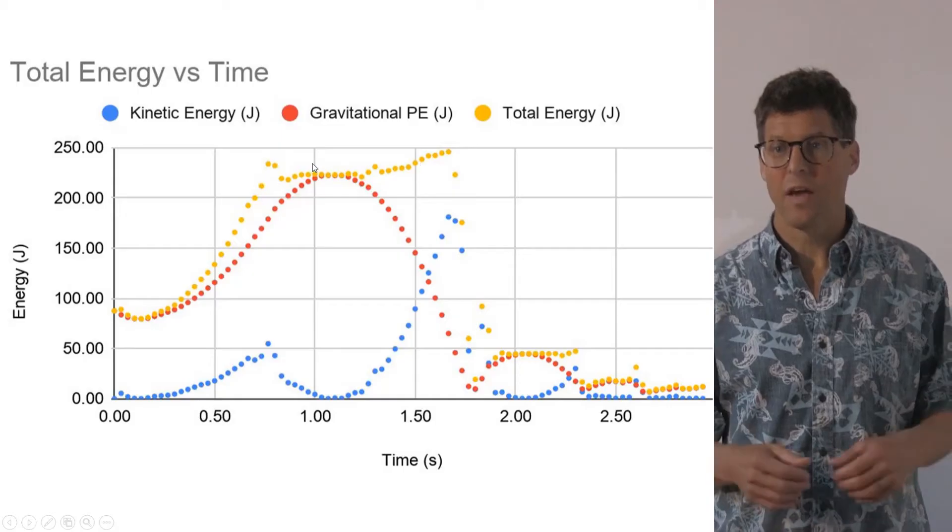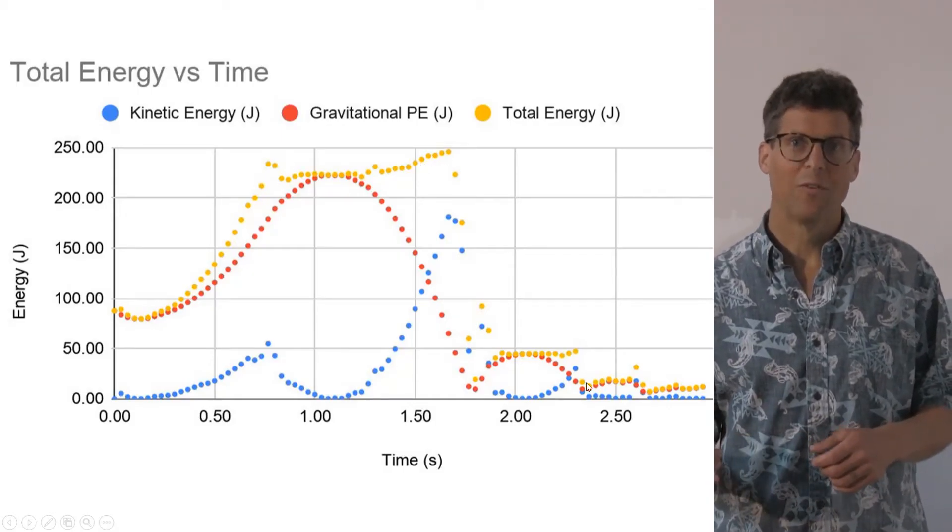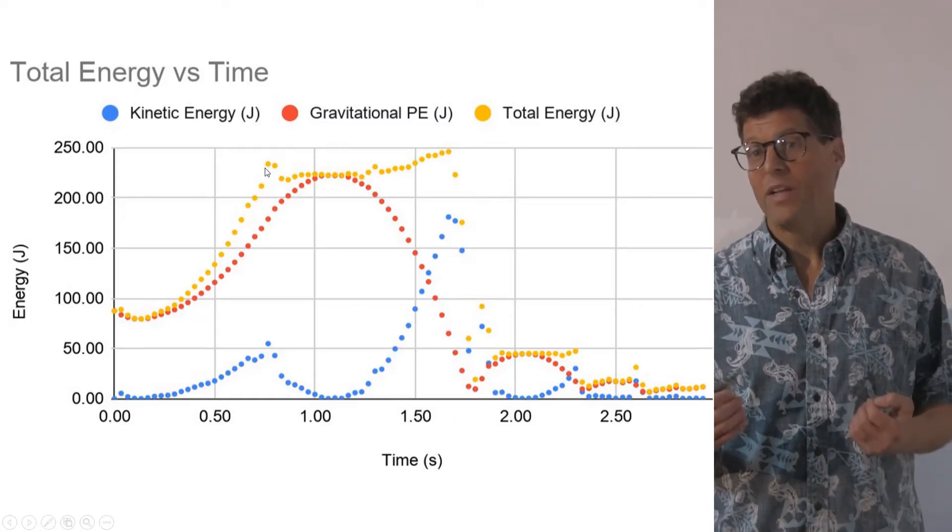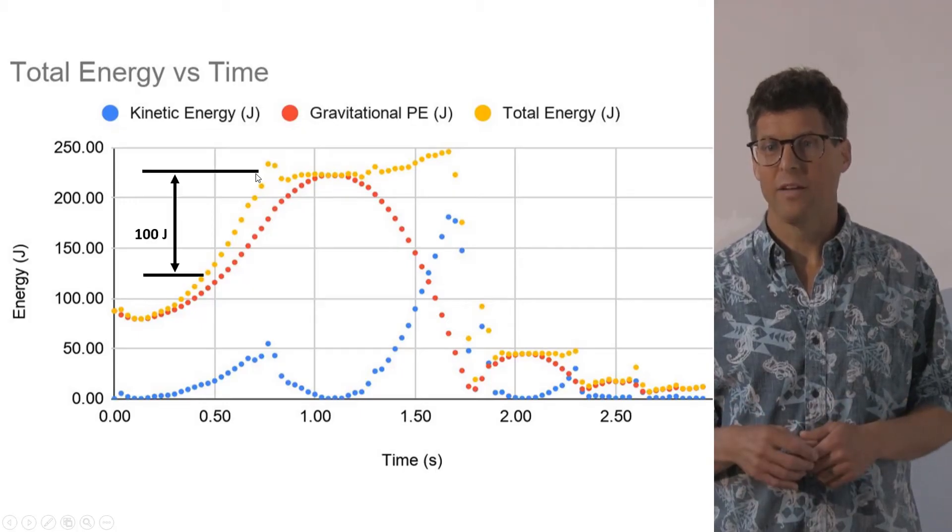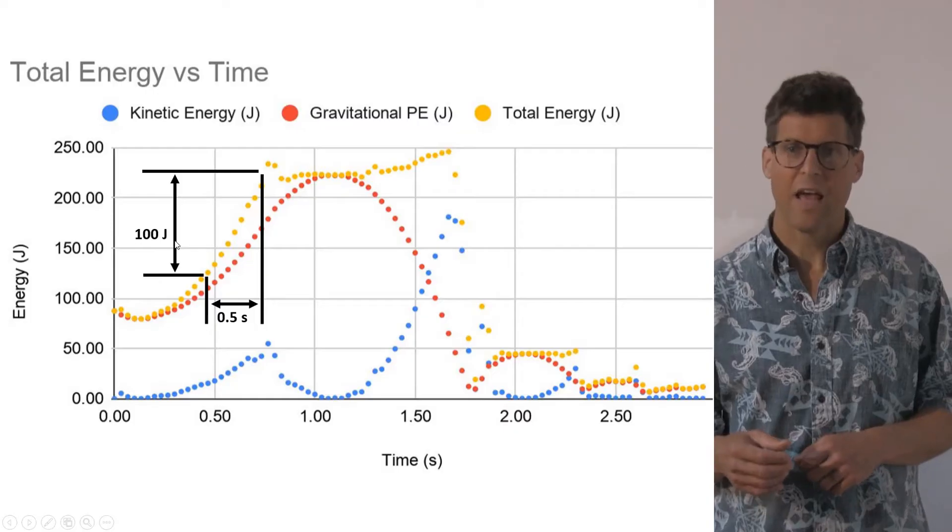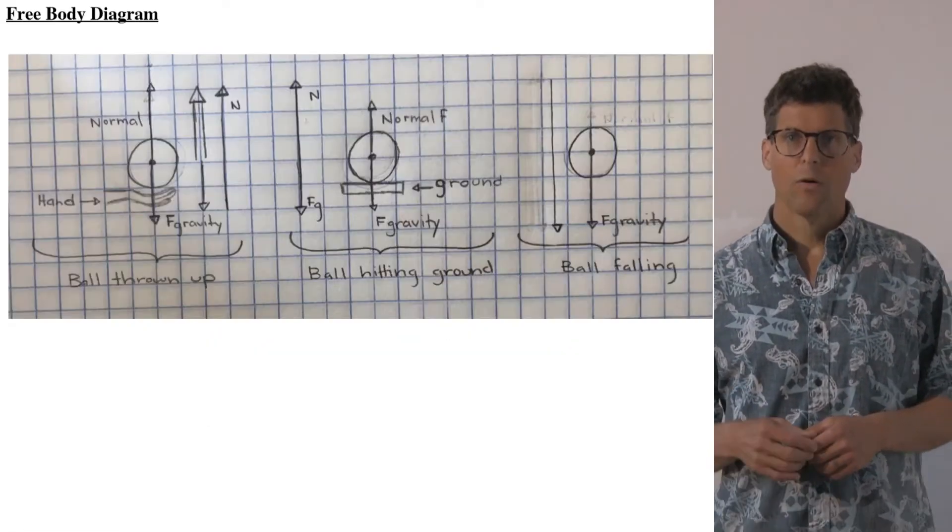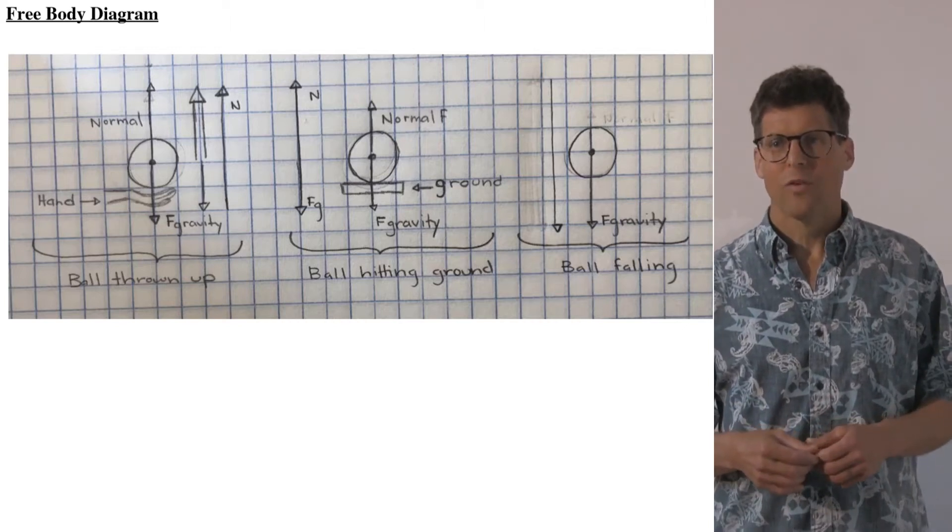And what we see is when the ball is in the air, the total energy is largely constant, but at a lower level for each subsequent bounce. Work is done on the system when he's throwing it into the air. And so the power is going to be the slope of this line where we see the ball gains approximately 100 joules of energy in half a second for a power of approximately 200 watts. We can also analyze the forces with the free body diagram.